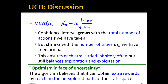Looking carefully at the key equation: the confidence interval grows with the total number of actions t taken, but shrinks with the number of times m_a we have tried arm a. The more times we have tried this arm, the more certain we are about our estimated reward, so the interval shrinks. This ensures that each arm is tried infinitely often while still balancing exploration and exploitation.